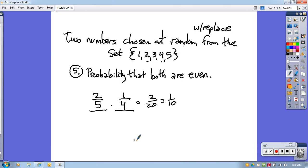Notice another way we could do this as well is we could use choose. The ways that we can choose two evens would be there's only two evens to choose from, we want two of them. And the way we could choose total two numbers would be 5 choose 2. And if we were to work that out, we would get 1 10th as well.